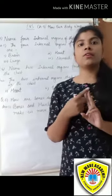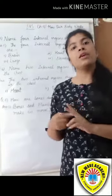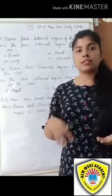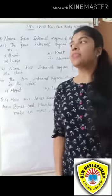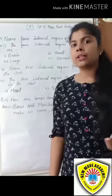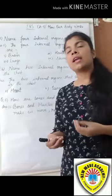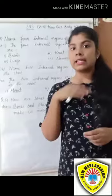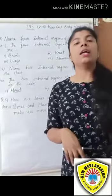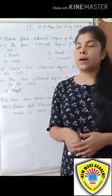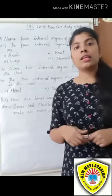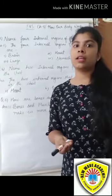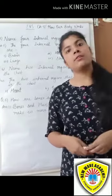Internal parts are those parts that cannot be seen directly — the parts of our body which are inside. And external parts are those we can see directly with our eyes: our hands, our neck, our eyes — these are all external parts.